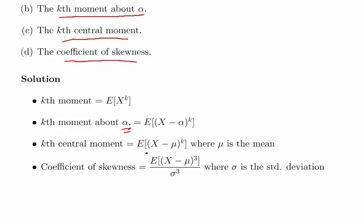Finally, the coefficient of skewness is the expected value of X minus μ cubed over σ cubed, where σ is the standard deviation.